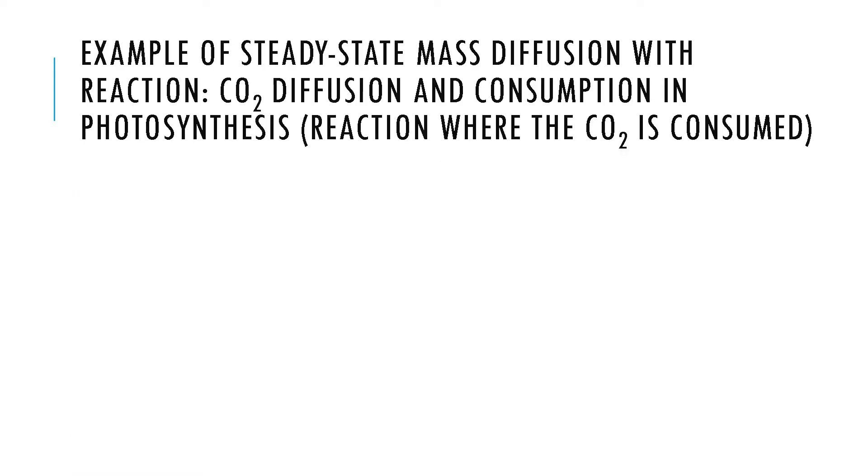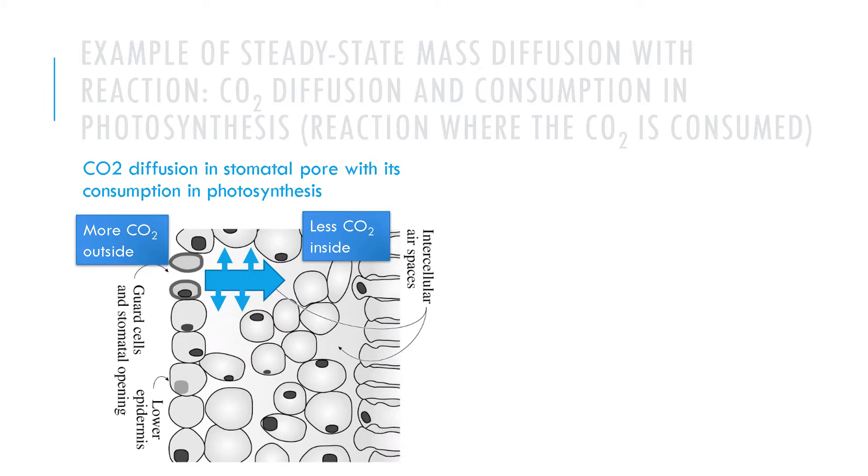We bring in another situation in mass transfer that is analogous to the heat transfer situation we just talked about. Shown is the cross section of a leaf. Here is the bottom where most of the stomatal pores or stomates are located. Stomatal pores are the exchange routes for gases. Carbon dioxide diffuses in through the stomata and as it diffuses it is also used up in photosynthesis, so again you have diffusion with simultaneous reaction.